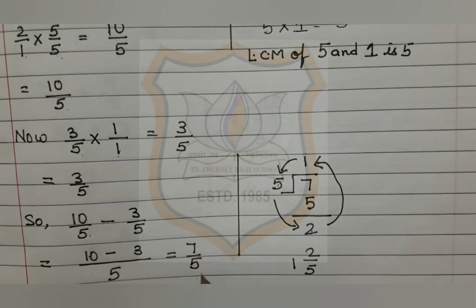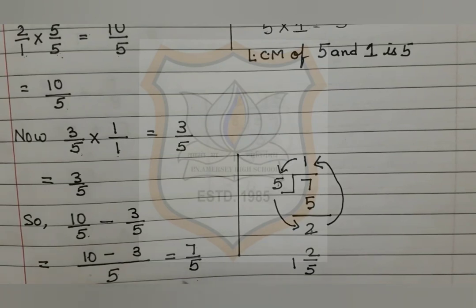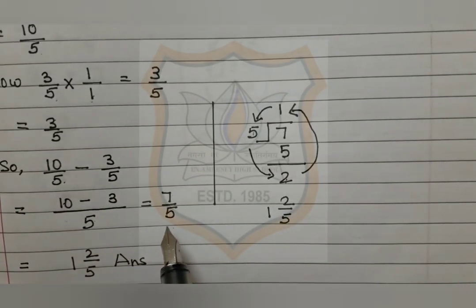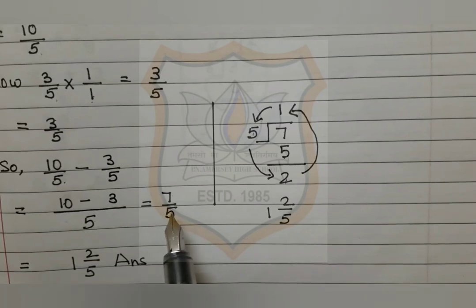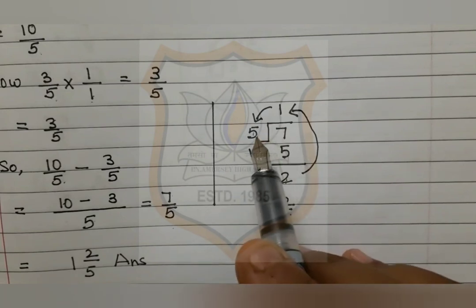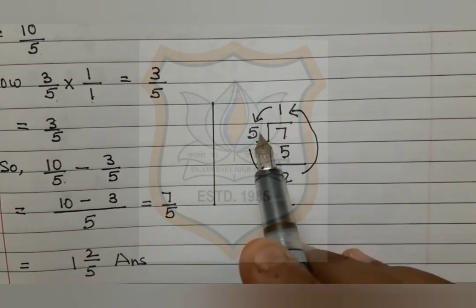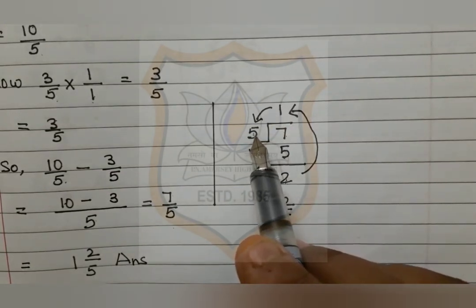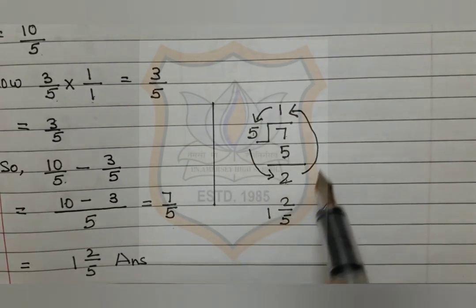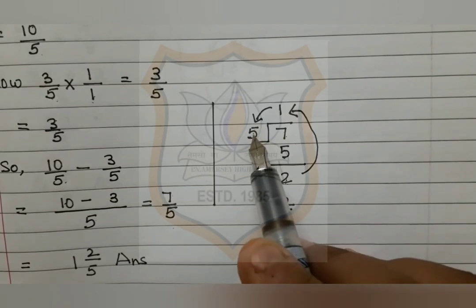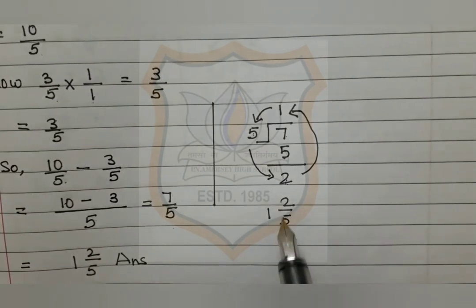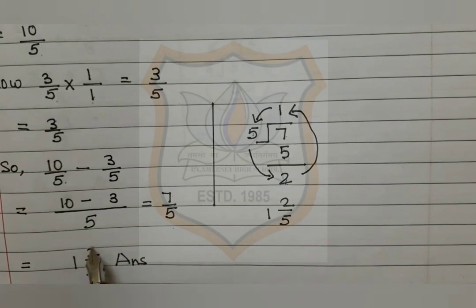Our answer is 7 upon 5. This is an improper fraction, so we must convert it into a mixed fraction. We divide 7 by 5: 5 ones are 5, and 7 minus 5 equals 2. So the remainder is 2, the quotient is 1, and the divisor is 5. These numbers move anticlockwise, giving us the mixed fraction 1 and 2 upon 5. That is our answer.